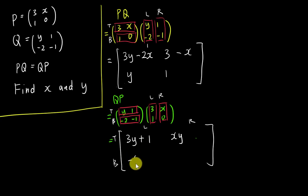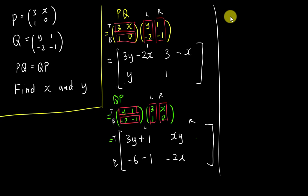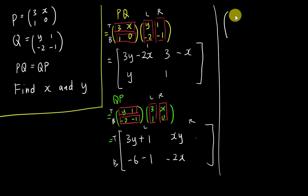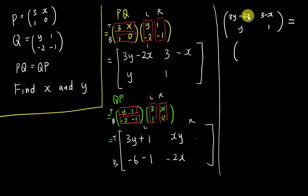For the bottom-left entry: negative two multiplied by three gives negative six, negative one multiplied by one gives minus one — so the bottom-left entry is negative seven. For the bottom-right entry: negative two multiplied by X gives negative two X, negative one multiplied by zero gives zero, so the bottom-right entry is negative two X. Now copying down PQ: top-left is three Y minus two X, top-right is three minus X, bottom-left is Y, bottom-right is one. And QP: top-left is three Y plus one, top-right is XY, bottom-left is negative seven, bottom-right is negative two X.